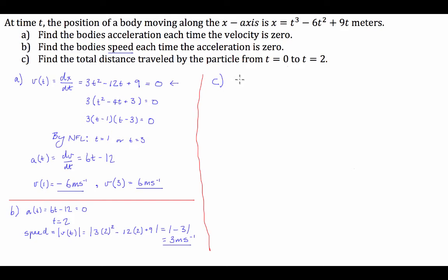We're going to have to integrate the velocity-time function over the given domain. The distance a particle travels is equal to the integral from 0 to 2 of v(t) dt. However, because distance is scalar rather than displacement, we need to examine the graph of the velocity function to check if any parts of the integral will cancel each other out.